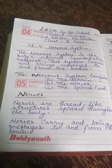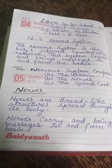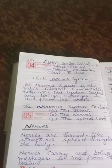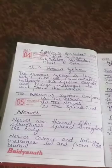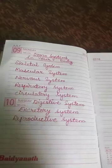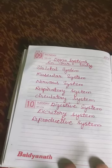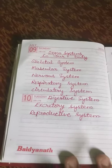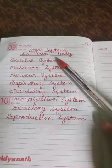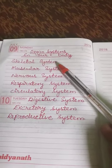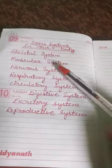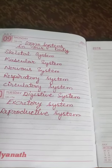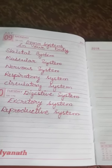Good morning students. Today we are going to start with a new chapter — the nervous system. Before coming to the topic, let me ask you how many types of systems are present in our body. You have studied in class third that different types of organ systems are present in our body. The skeletal system is the framework of bones that gives shape and support to our body. Next comes the muscular system, which comprises the muscles, and muscles help our body to move smoothly.